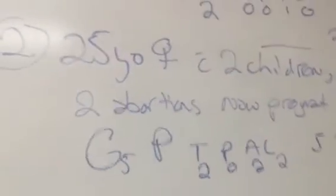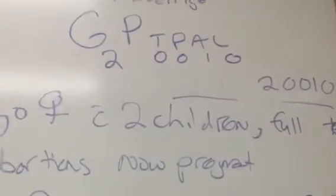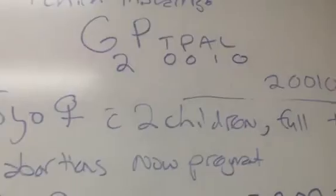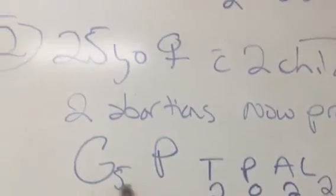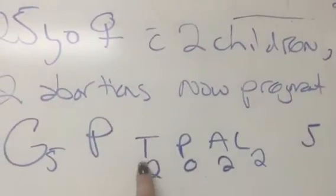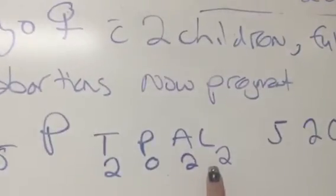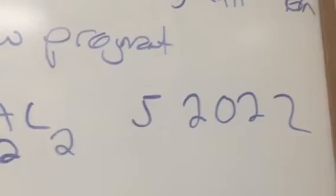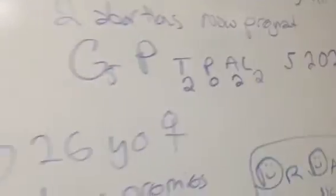Next case: a 25-year-old female with two full-term children, two abortions, and now she's pregnant. How many total pregnancies? Two full-term children — that's two; two abortions — that's another two; now she's pregnant — that's one more. So that's G5. Breaking down her para: two term deliveries, zero premature deliveries, two abortions, two living children. You would write that as 5-2-0-2-2: five total pregnancies, two term, zero preemies, two abortions, two living children.